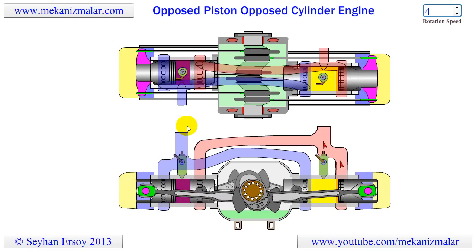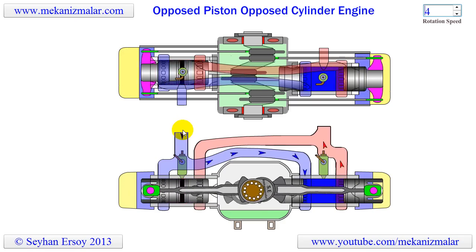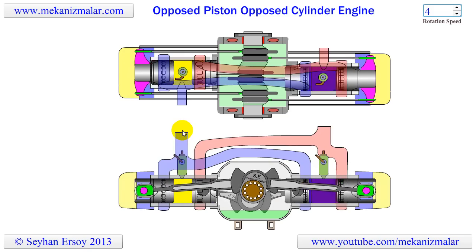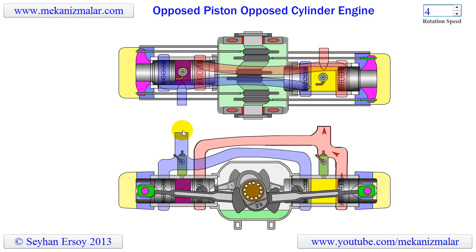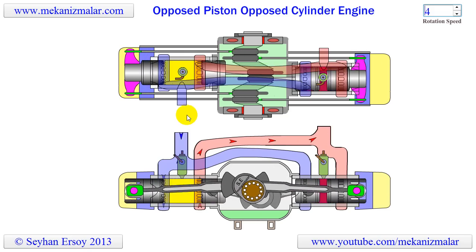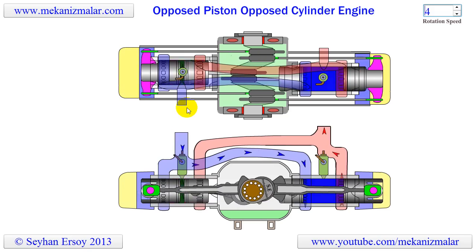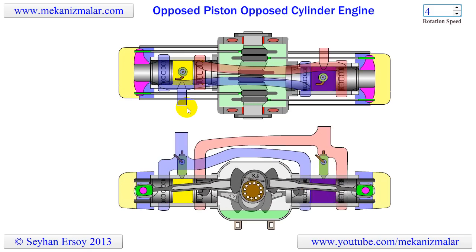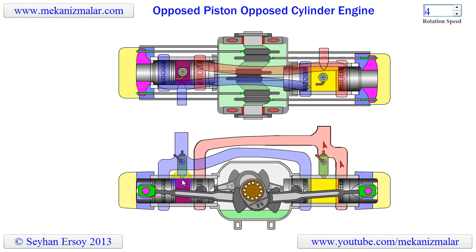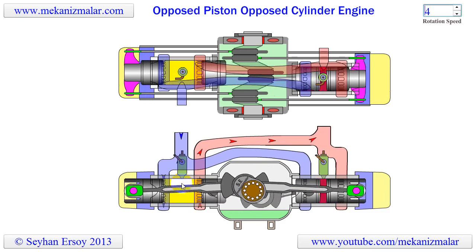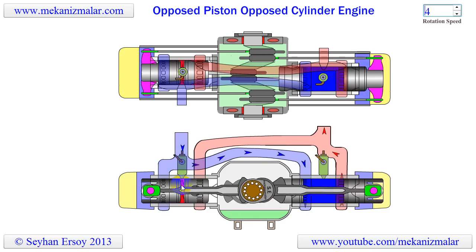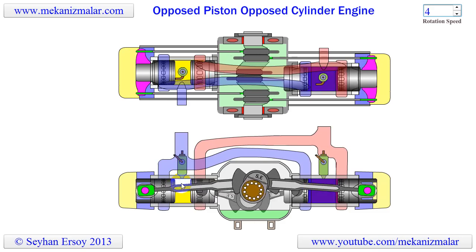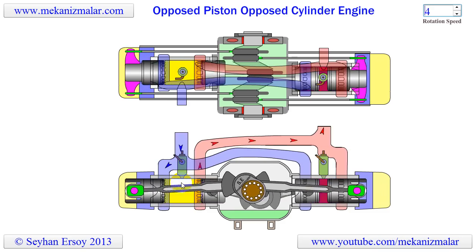The result is an engine family that is lighter, more efficient, and economical, with lower exhaust emissions. The APOC engine has 50% fewer parts than a conventional engine, and uses conventional components, materials, and processes.